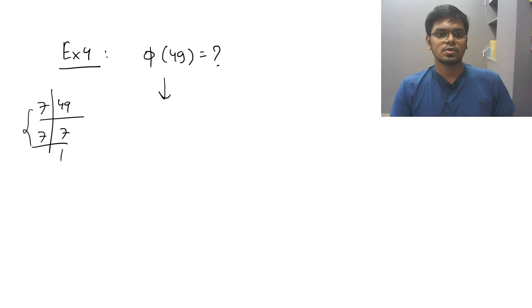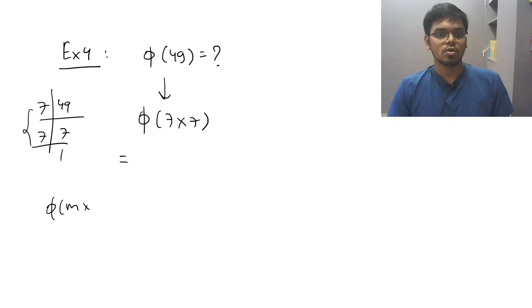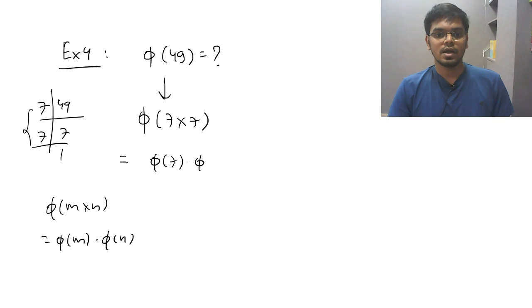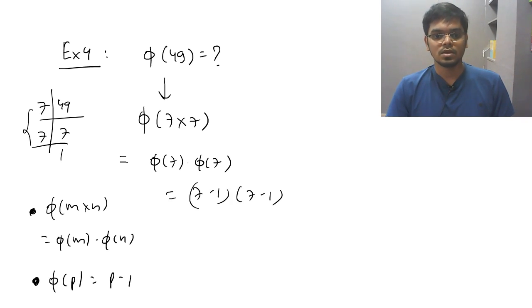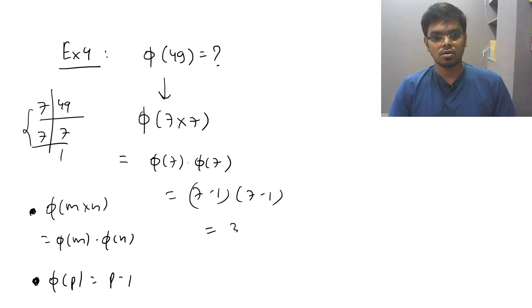Many students will write: 49 equals 7 times 7, so phi of 49 equals phi of 7 times 7. Then using the property phi of m times n equals phi of m times phi of n, they split it as phi of 7 times phi of 7, giving 6 times 6, which is 36. But this is absolutely wrong.